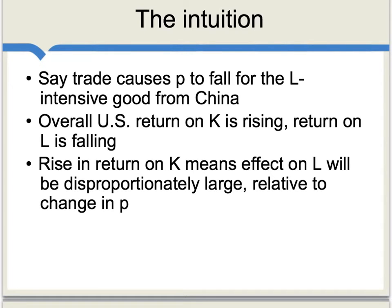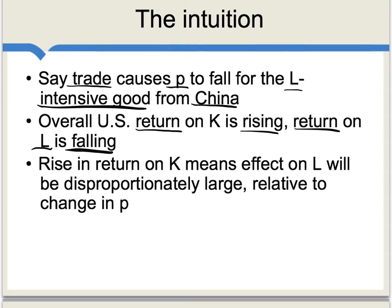Let's consider the intuition here. If the opening of trade causes a price to fall — say, the price for the labor-intensive good coming from China — then in the U.S. the return to capital is rising and the return to labor is falling. Because we've assumed perfect competition, prices of goods have to equal their costs of production. So if a price is falling and the return to capital is rising, the return to labor has to be falling by even more than the change in the price of the good. This is sometimes called the magnification effect.